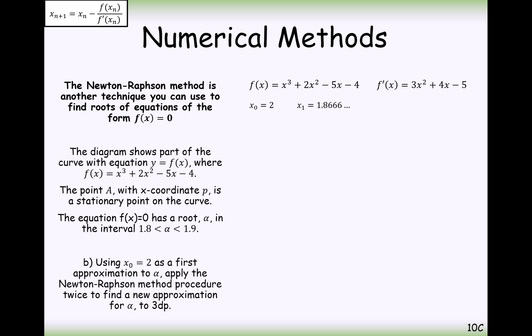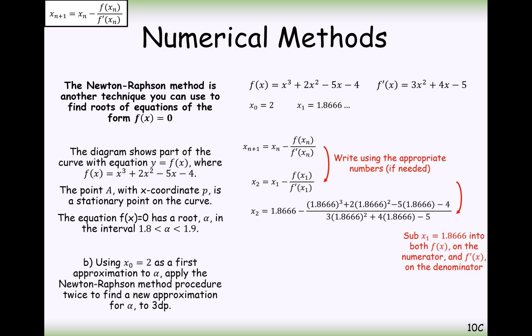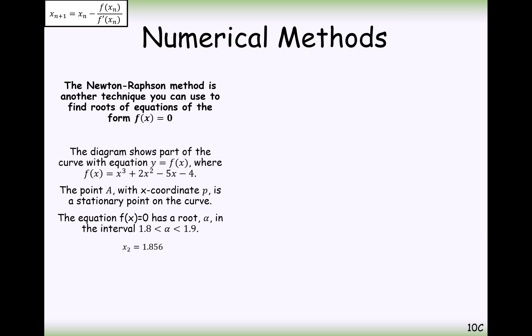So there we go. That's how we do it. And if we were to do it again, we're going to do it again. We're going to need to apply the procedure twice. So we're now going to use 1.8666. Or you could probably use the answer button on your calculator. That would probably be better than using 1.8666. It will give you a more accurate answer. And in this case here, it's 1.856 to 3 decimal places.